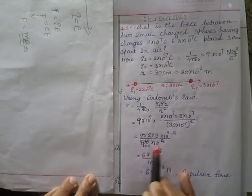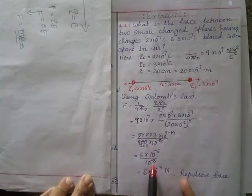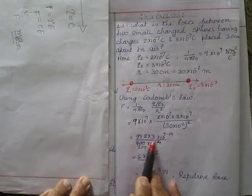It will remain here and this will be minus 6. So 2×3 is 6, and then you combine this 10⁻³ newton.